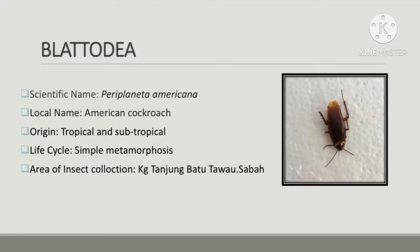Next is from order Blattodea and the scientific name is Periplaneta americana. The local name is American cockroach, originating from tropical and subtropical regions. The life cycle is simple metamorphosis, from egg to adult. I collected it in the same area, Kampung Tanjung Batu, Tawau, Sabah. The American cockroach is reddish-brown, about three inches in length, with half wings. This species typically lives outdoors in vegetation or under mulch and finds its way into homes through small openings. Most cockroach species are omnivores, eating everything from plants to dead animals.